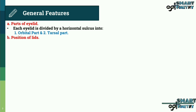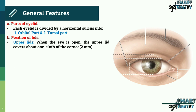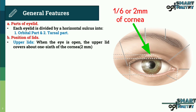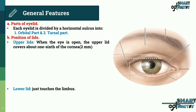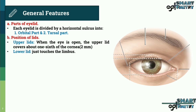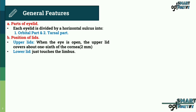Now the position of lids. Upper lid: when the eye is open, the upper lid covers about one sixth of the cornea, which is about two mm. Lower lid: the lower lid just touches the lower limbus.